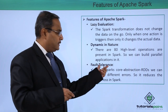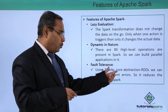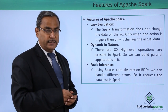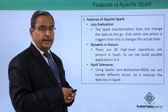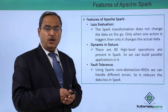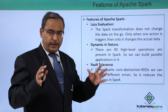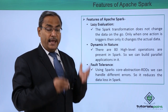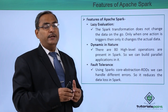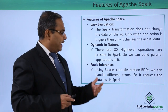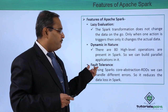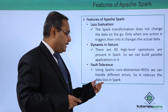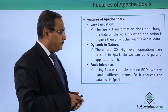Next one is fault tolerance. Using Spark's core abstraction RDDs, we can handle different errors. RDD is a data structure where one dataset will be divided and distributed onto multiple different servers. As a result, the probability of data loss is reduced, and that is why the system is known as fault tolerant. It reduces the data loss in our Spark system.